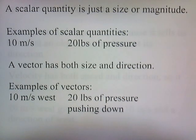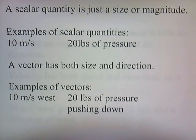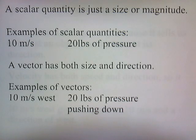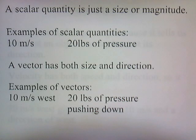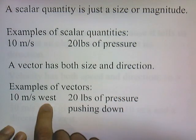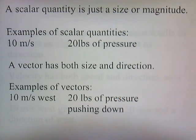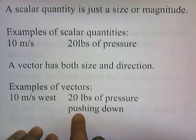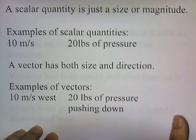A scalar quantity is just the size or magnitude. Examples of scalar quantities would be 10 meters per second or 20 pounds of pressure. A vector has both size and direction. For example, 10 meters per second west has size and direction. 20 pounds of pressure pushing down — 20 pounds is the size and the direction is pushing down.